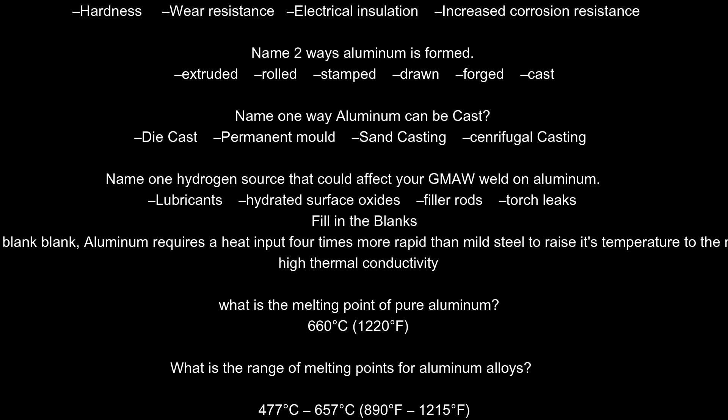Name two ways aluminum is formed. Extruded, rolled, stamped, drawn, forged, cast. Name one way aluminum can be cast. Die cast, permanent mold, sand casting, centrifugal casting. Name one hydrogen source that could affect your GMAW weld on aluminum. Lubricants, hydrated surface oxides, filler rods, torch leaks.